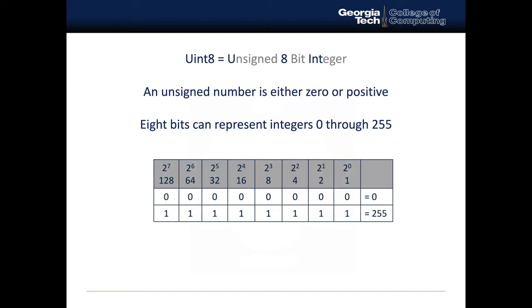In order to represent a pixel on the color spectrum for red, green, or blue, we're going to use an unsigned 8-bit integer. And this means that when we say an unsigned number, it's going to either be 0 or positive.